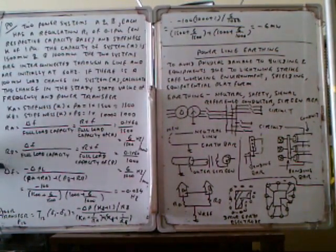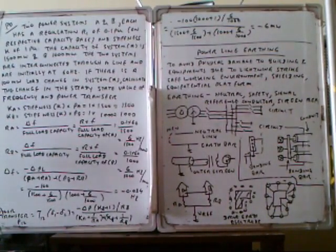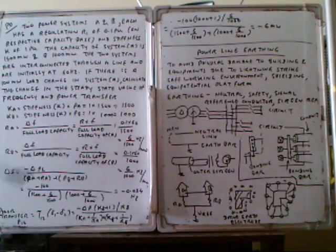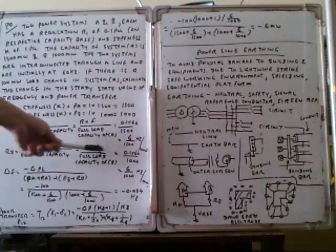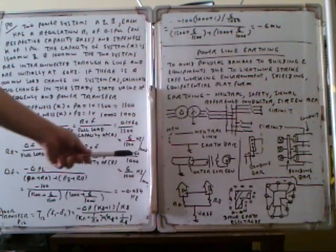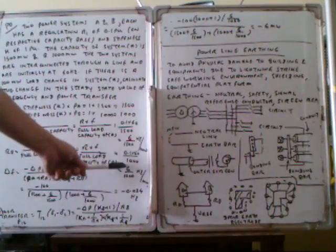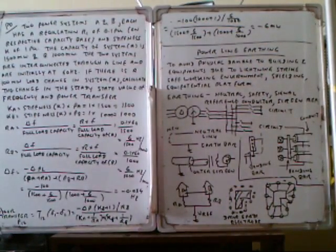R_B is the regulation for system B. R multiplied by F divided by full load capacity of B. R is 0.05 per unit, frequency is 60, and full load capacity of B is 1000, so this becomes 6 divided by 1000.